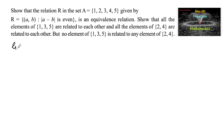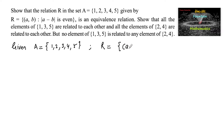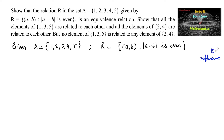Given A = {1, 2, 3, 4, 5} and relation R = {(a, b) : |a - b| is even}. Now let us prove it an equivalence relation. To prove an equivalence relation, we need to prove that R is reflexive, symmetric, and transitive.